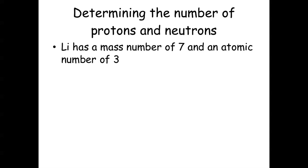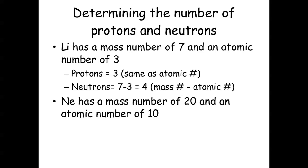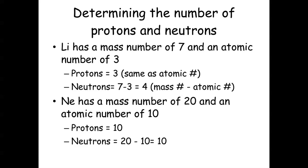Lithium has a mass number of seven and an atomic number of three. It has three protons, and the mass number minus the atomic number — seven minus three — gives four neutrons. It also has three electrons, because electrons have to match the number of protons. Neon has a mass number of 20 and an atomic number of 10, so it has 10 protons, 10 electrons, and 20 minus 10 equals 10 neutrons.